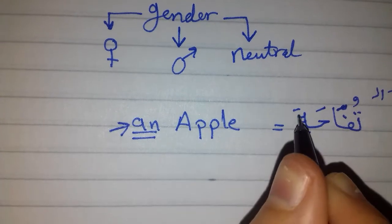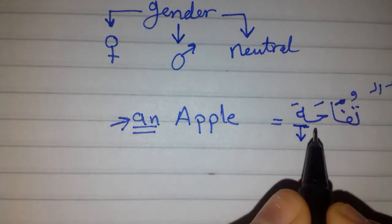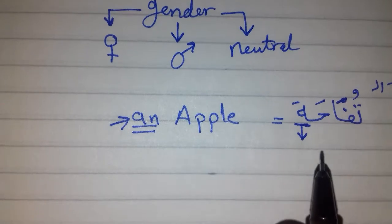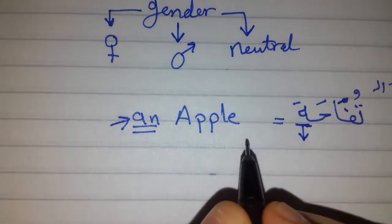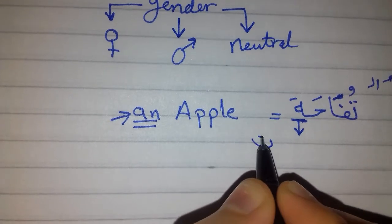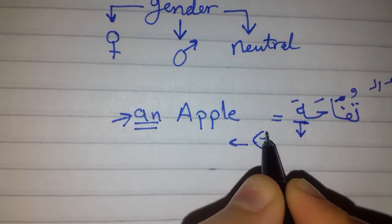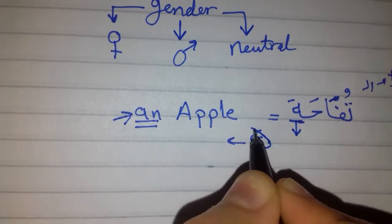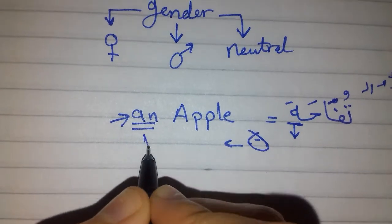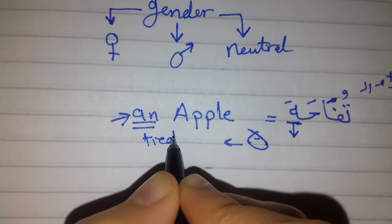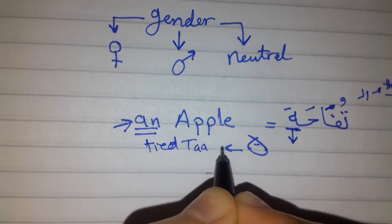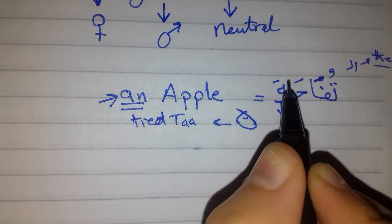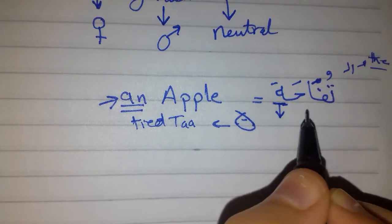Which is Ta'a - Ta'a al marboota, or the closed Ta'a. Actually, Ta'a al marboota literally means the tied Ta'a, because it seems like this is Ta'a, as if you just pull at two sides, then it becomes like this. So it's called the tied Ta'a. Anyways, this is the first sign: the Ta'a at the end of the word, the Ta'a al marboota at the end of the word, means that it's feminine.